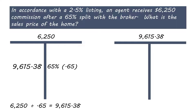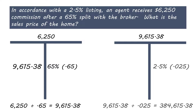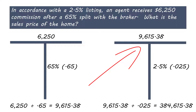Now that we know the total commission, we're able to continue to solve for the home sales price. The total commission of $9,615.38 will represent our part and will go on the top of the T-bar.